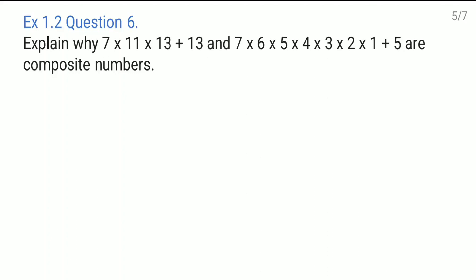This is exercise 1.2 question number 6. Explain why 7 into 11 into 13 plus 13 and 7 into 6 into 5 into 4 into 3 into 2 into 1 plus 5 are composite numbers.